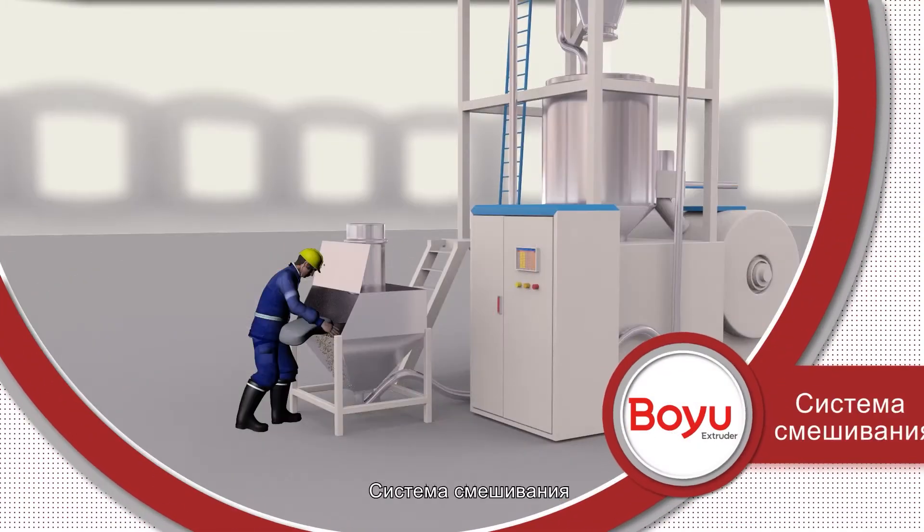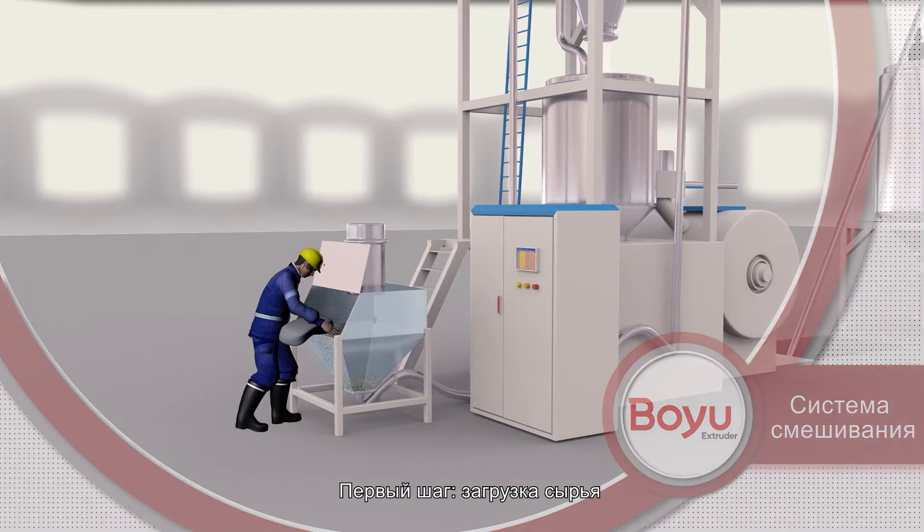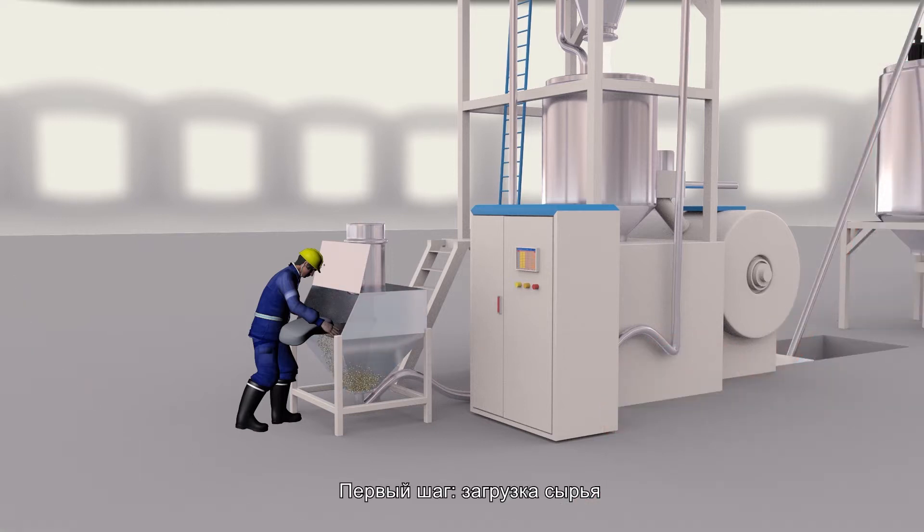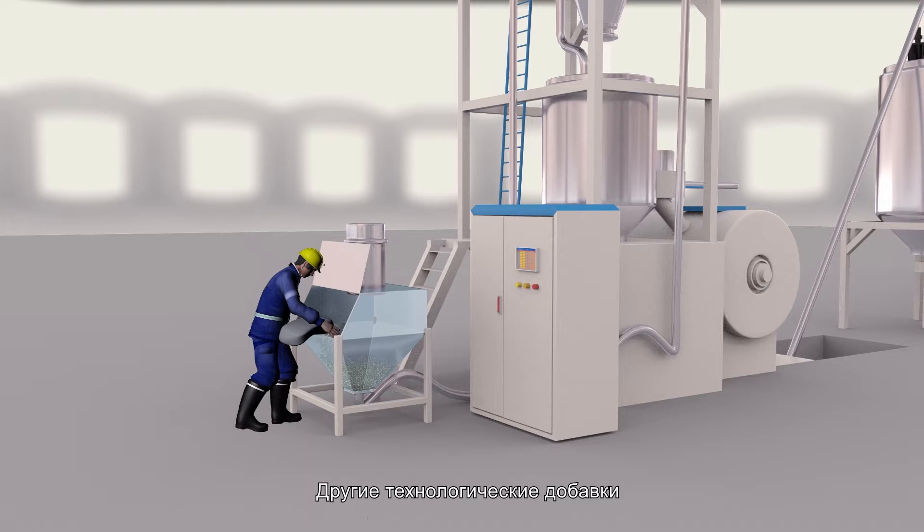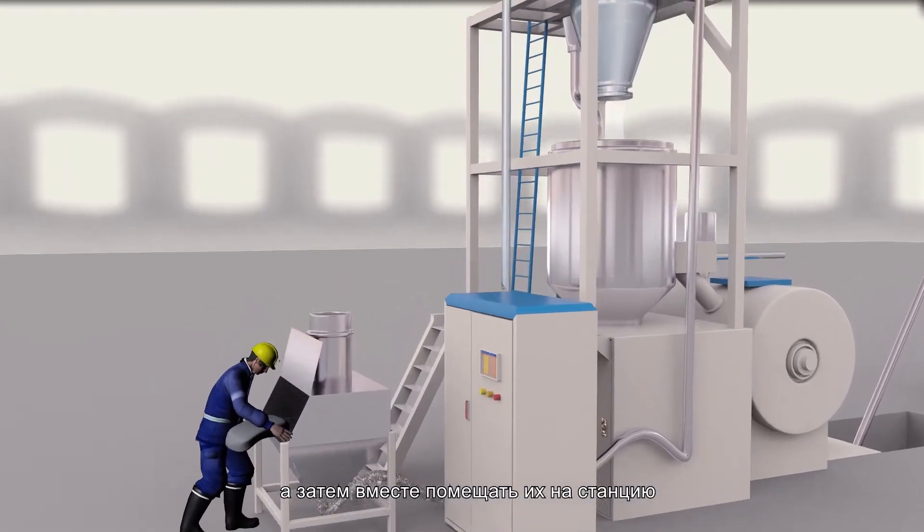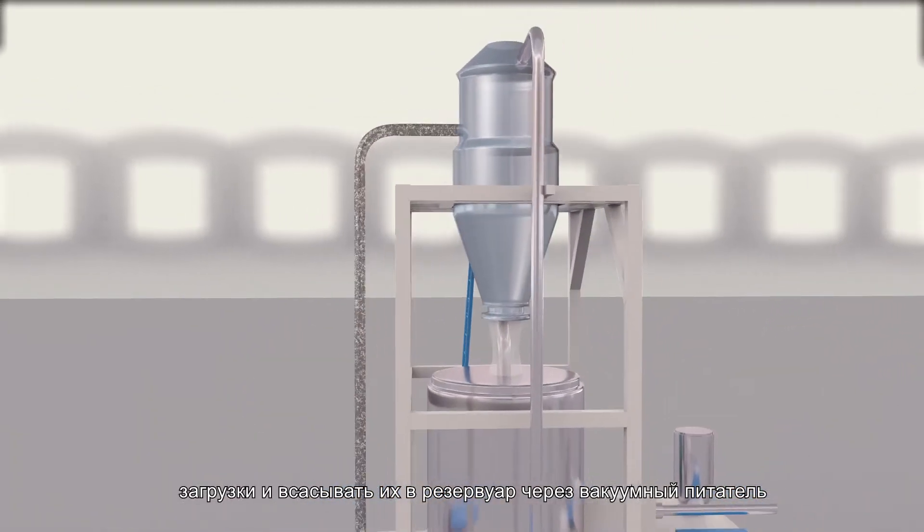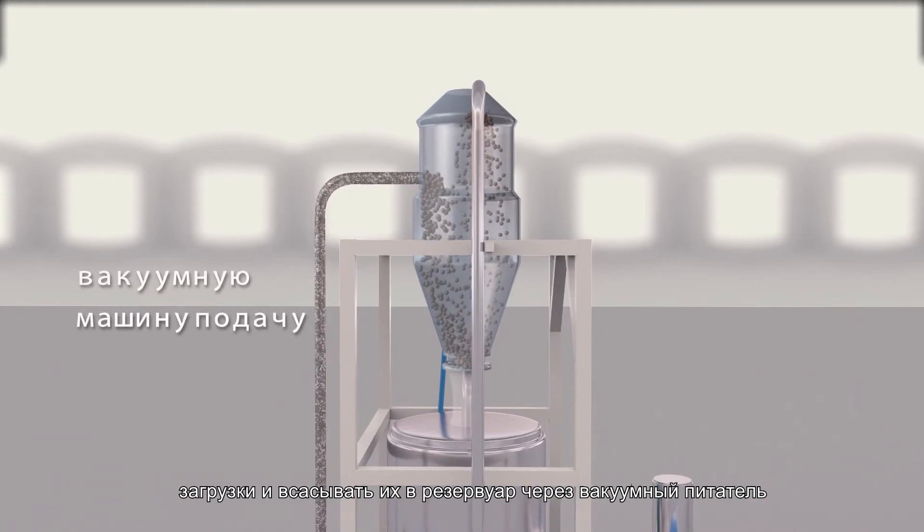Mixing System. The first step is feeding. Materials are put into the mixer in proportion to the formula. Other processing aids need to be measured separately and mixed together, then put into the feeding station and sucked into a feeding tank by vacuum feeder.